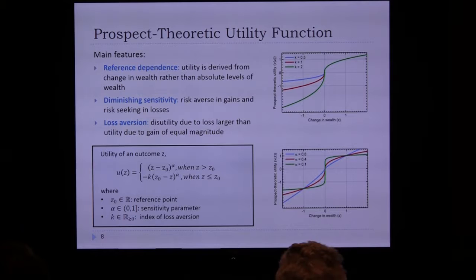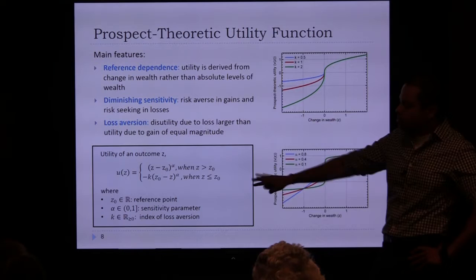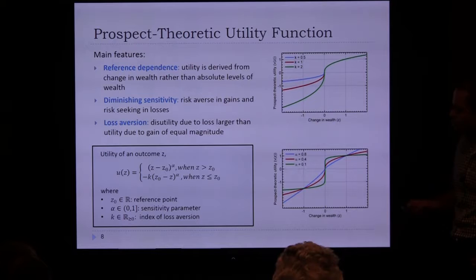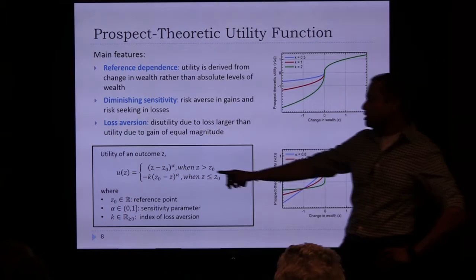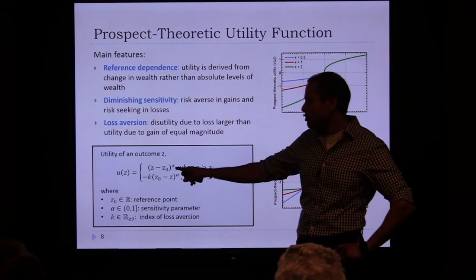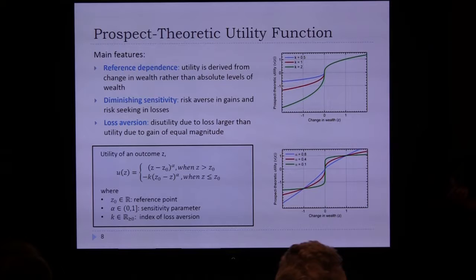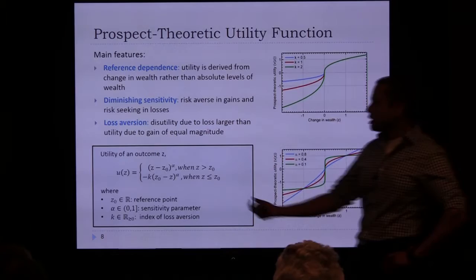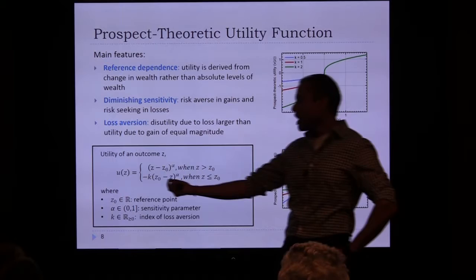All of this has been experimentally observed and there are mathematical parameterizations of how people view losses and gains. The prospect theoretic value function uses a reference point Z-naught. If Z is greater than Z-naught (gain regime), the gain (Z minus Z-naught) is raised to the power of alpha to shape it by the sensitivity parameter. If Z is less than Z-naught (loss regime), the loss amount is shaped by alpha and then amplified by constant K, which captures loss aversion — losing a dollar feels like losing K dollars.